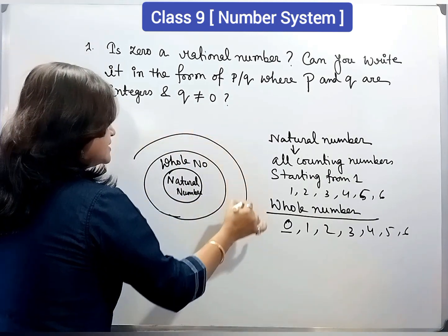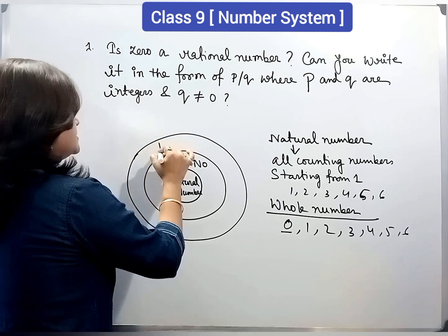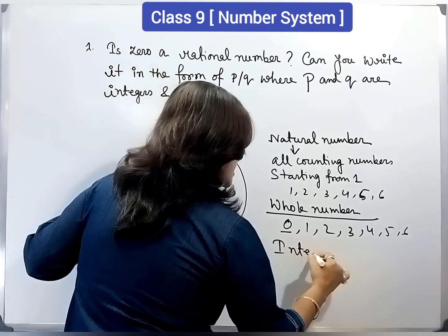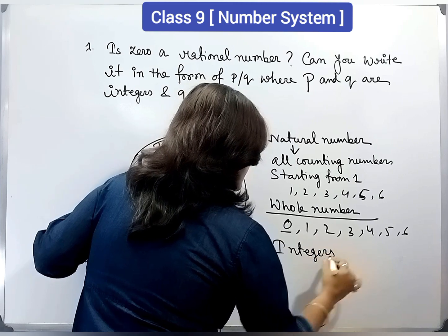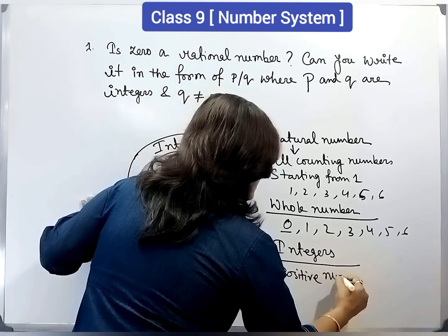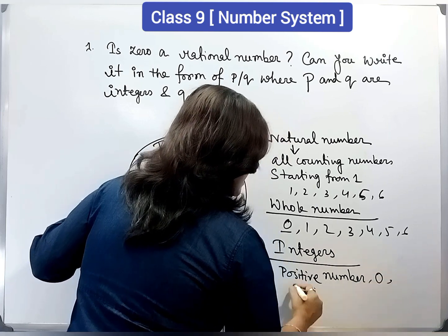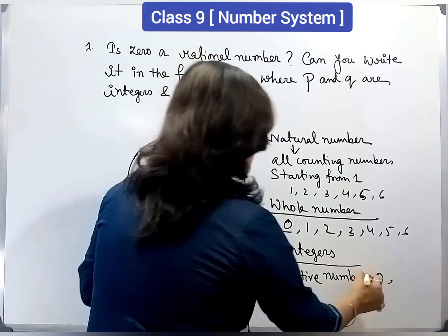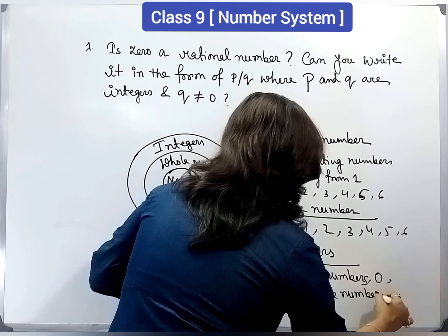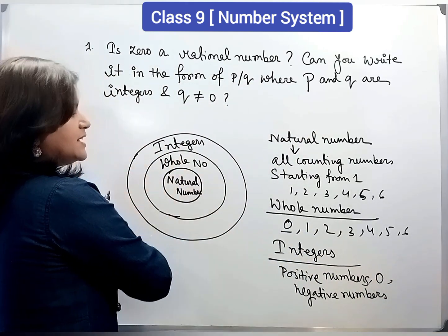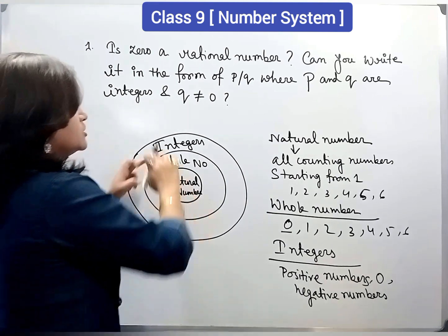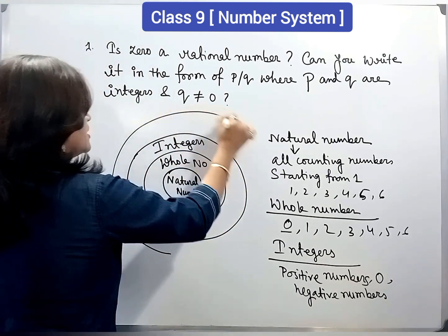Now, when we add negative numbers, then it becomes integers. So, integers are the positive numbers, 0 and negative numbers. That means, when we add negative numbers with whole number, then it becomes integers. Now, next, rational number.